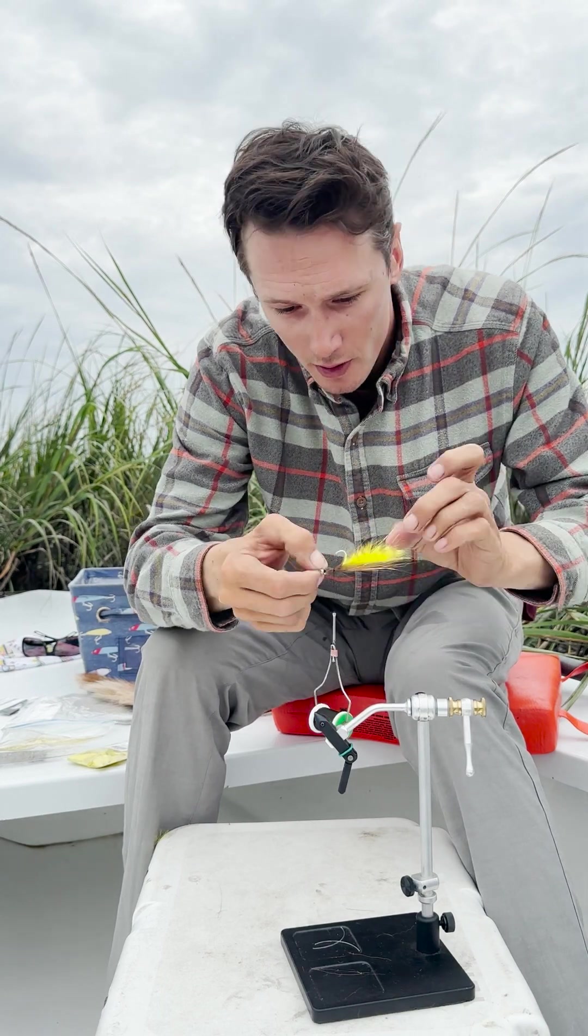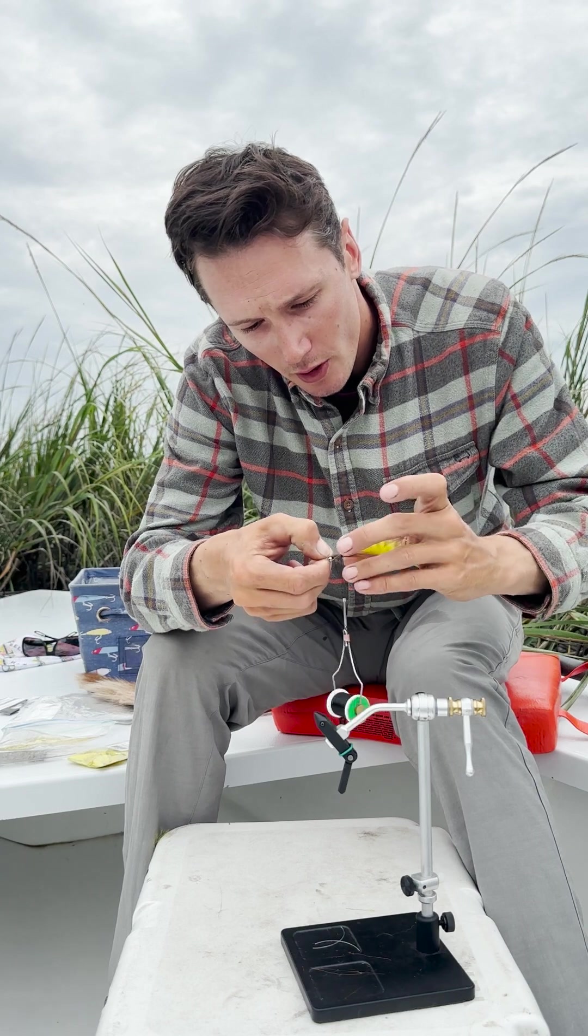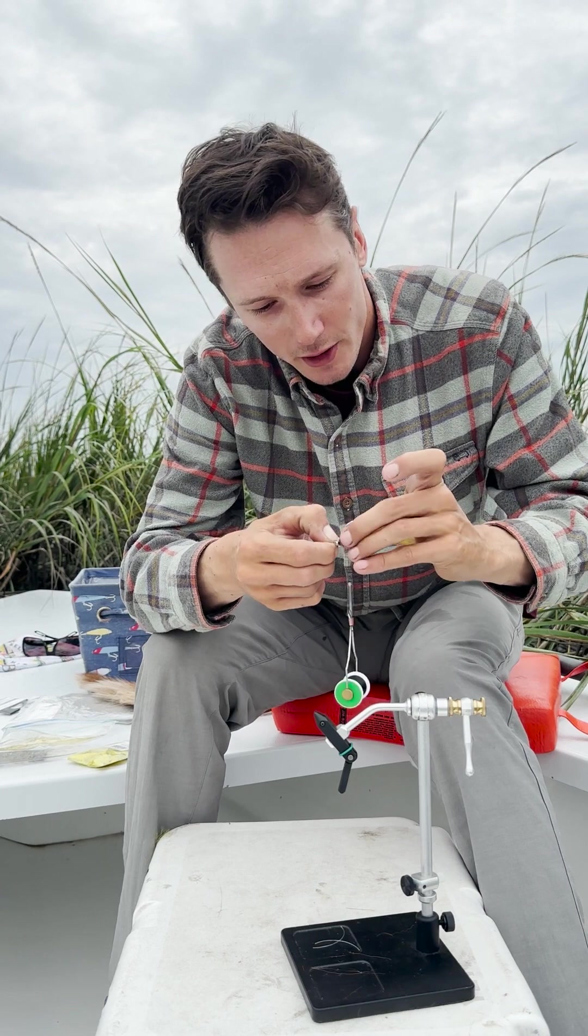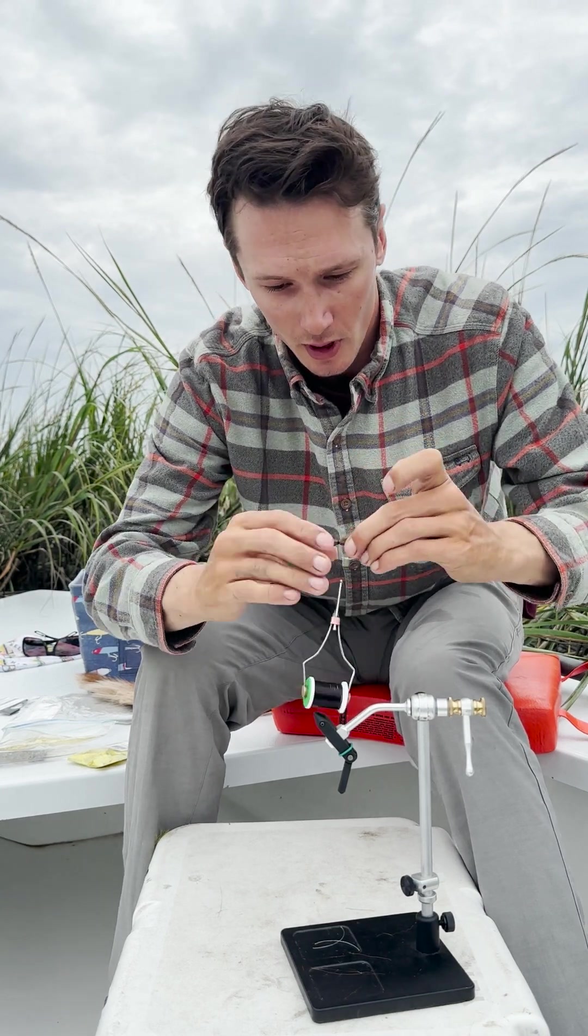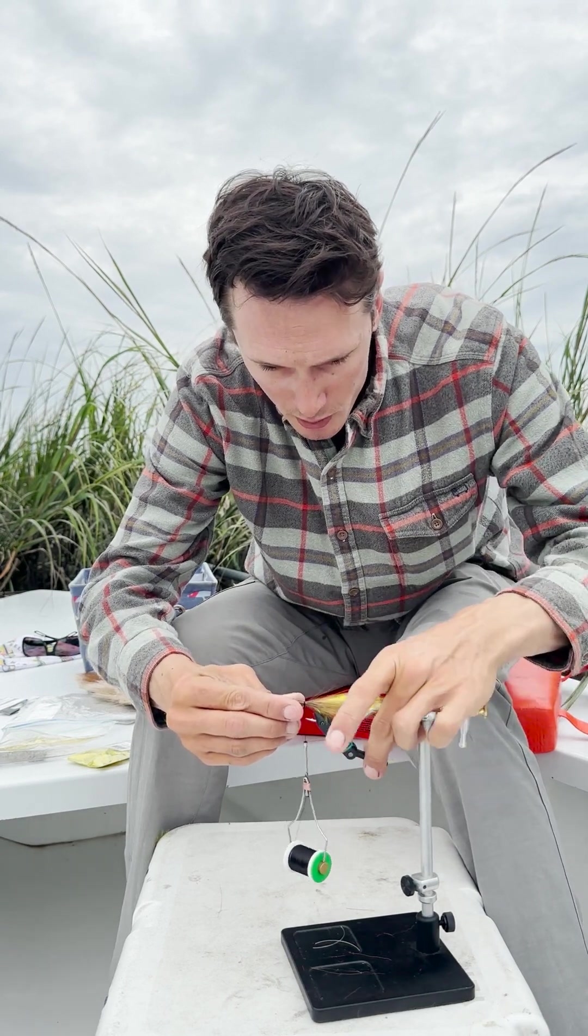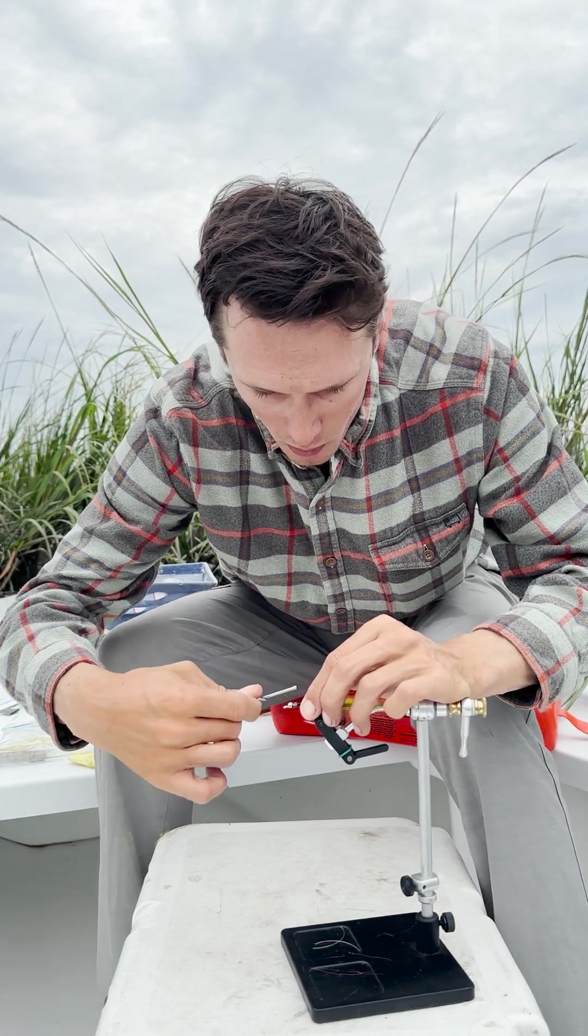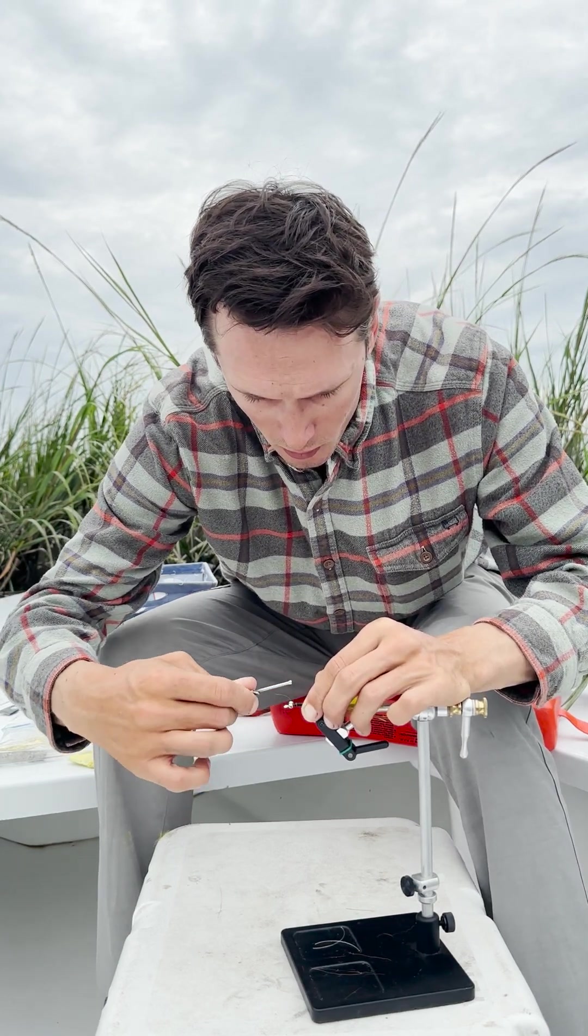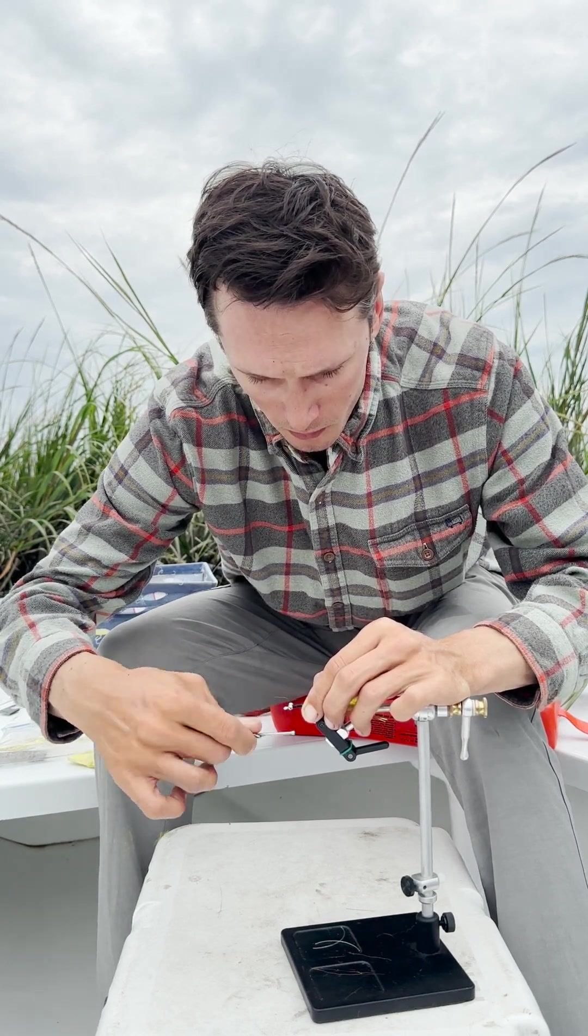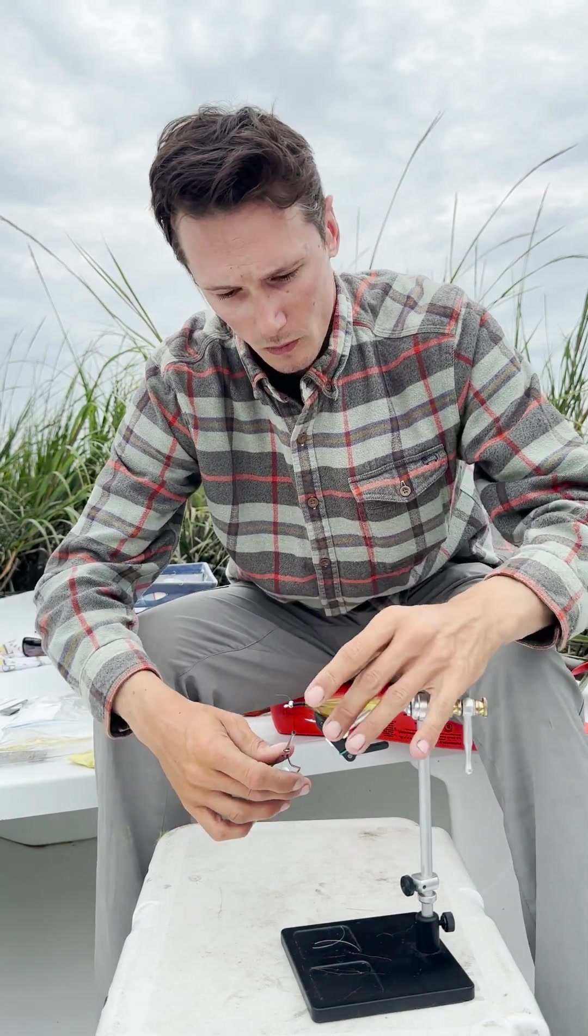Especially around the bottom side of the hook shank there where the rabbit tends to spin around from casting. That helps a lot and it definitely gives the fly some good moving water characteristics as well. Put that back in there and tighten that down good.